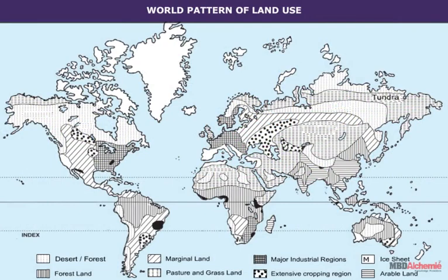The world pattern of land use is given on the map below. It will be observed that both climate and relief factors determine land use patterns. In major parts of the world, nomadic herding and primitive agriculture are still practiced, whereas in developed parts of the world, commercial agriculture is practiced.